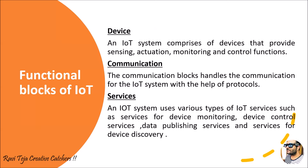The processed input is then given with respect to actuation, such as controlling a motor, controlling electrical appliances, or anything similar. A device within an IoT system also comprises monitoring as well as control functions — for example, switching on and off several appliances. These are the basic examples of the device functional block.